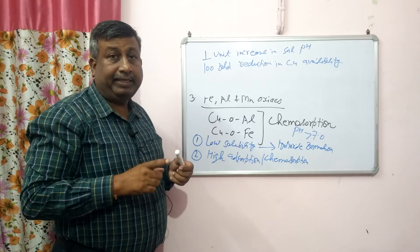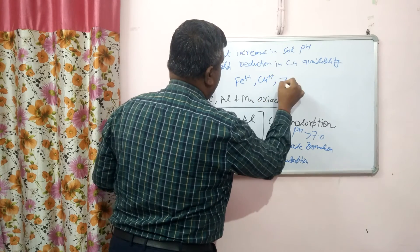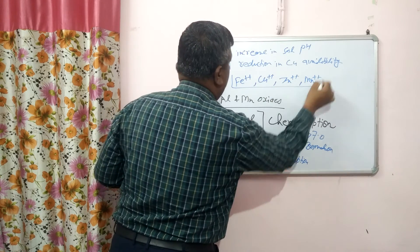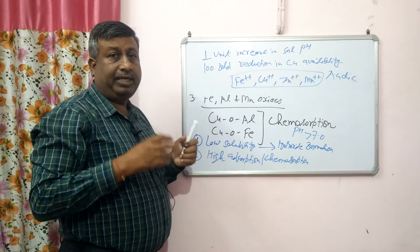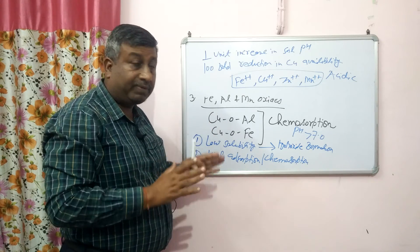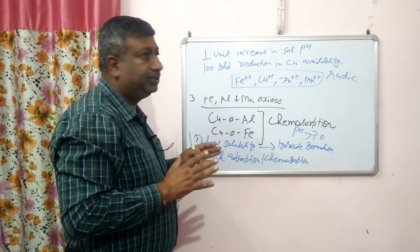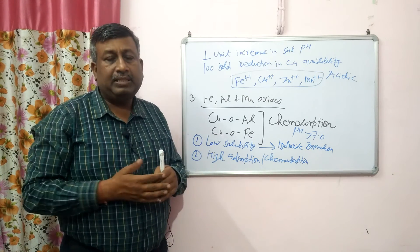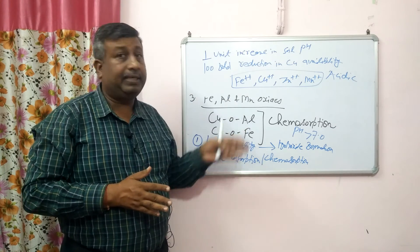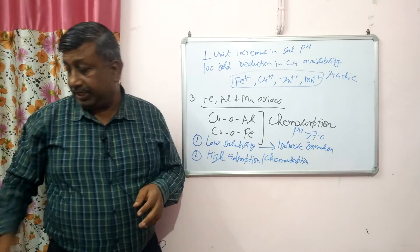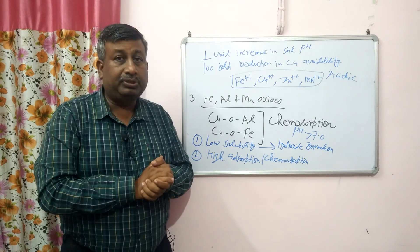Soil pH is therefore very important. Metallic cations — Fe, Cu, Zinc, and Manganese — are available under acidic pH conditions. Copper reduction at high pH occurs because of: first, less soluble hydroxide formation; second, adsorption on clay and organic matter; and third, chemosorption on iron and aluminium oxides. In saline and alkali soils where pH is high, there is copper deficiency. These are the reasons why copper availability is reduced at high pH.